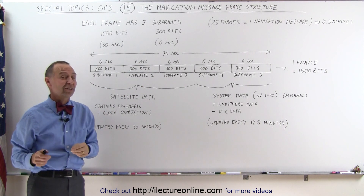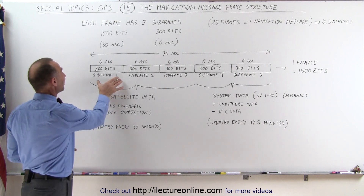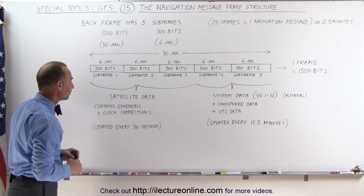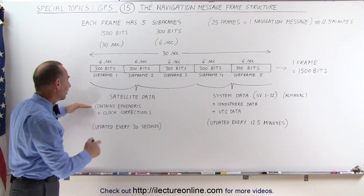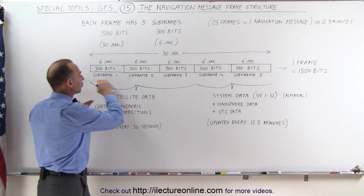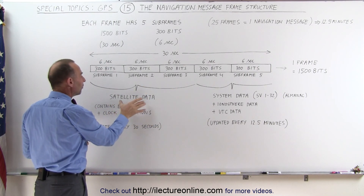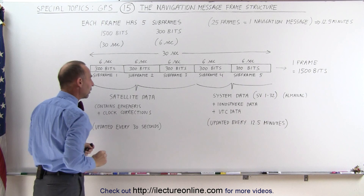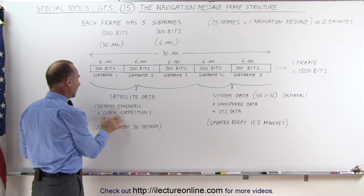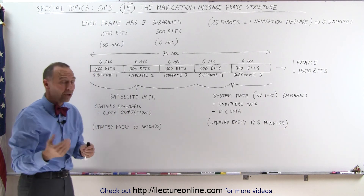It takes exactly six seconds to send the data of a subframe. In the satellite data, the first three subframes contain the ephemeris of the satellite that we're communicating with. It includes clock corrections, and those are extremely important.